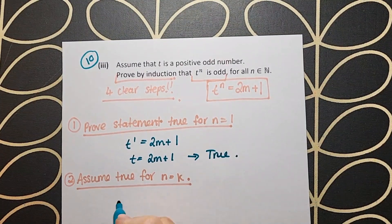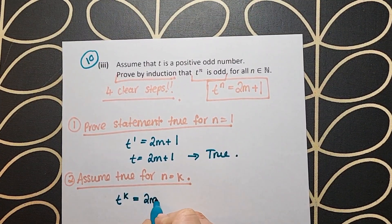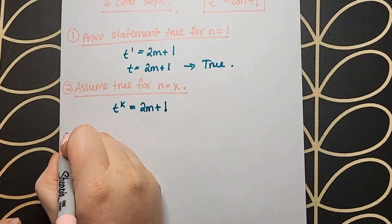I take my t_n equals 2m plus 1 and I substitute in 1 for n, and I can clearly see that I get t_1. So t_1 is equal to 2m plus 1. t_1 must be odd. We have proved previously that 2m plus 1 is odd.